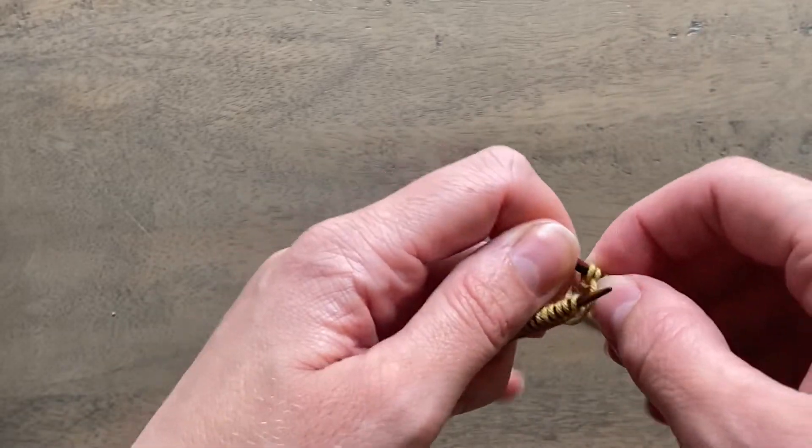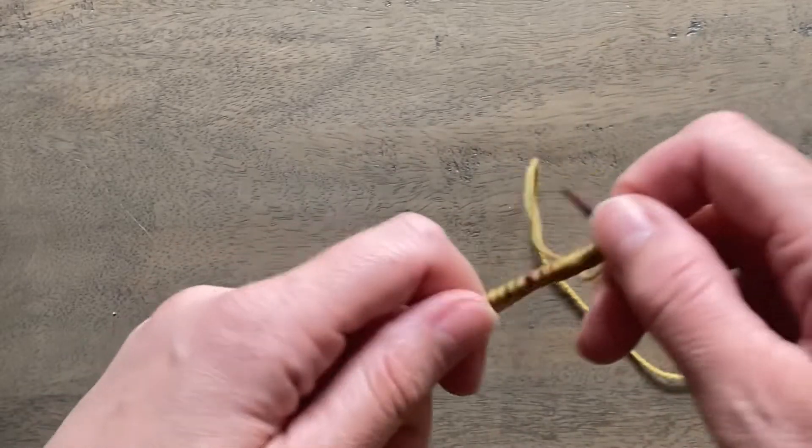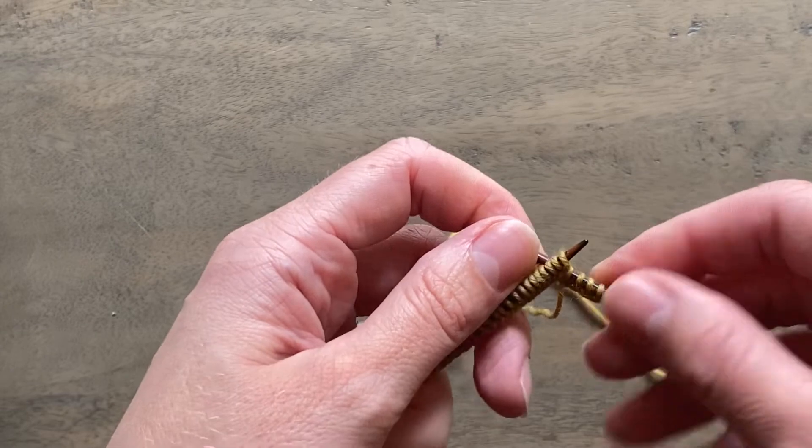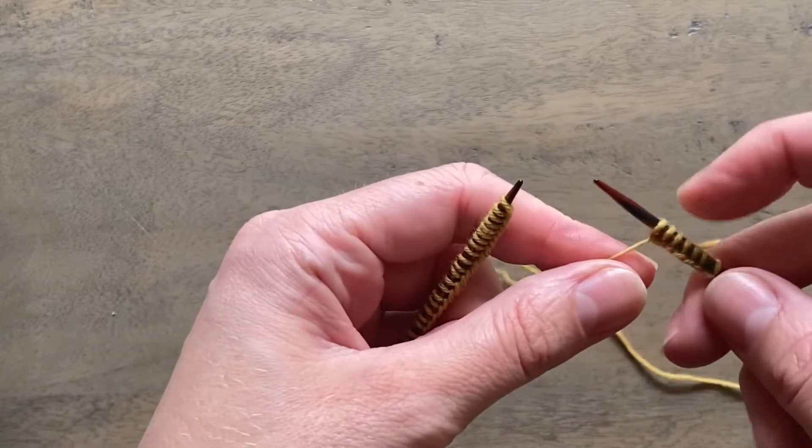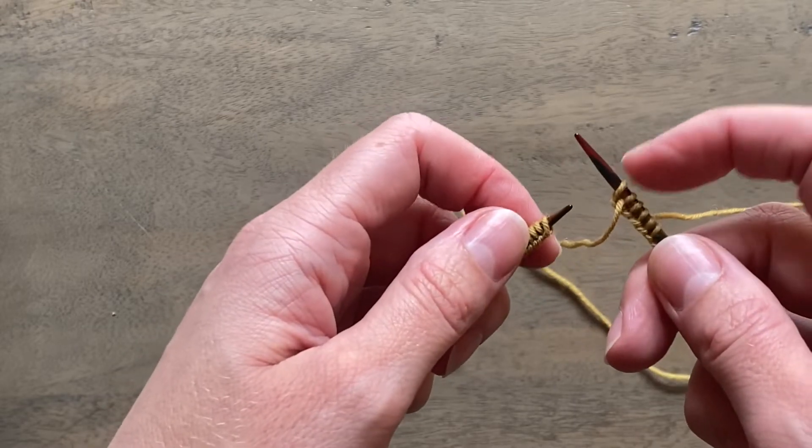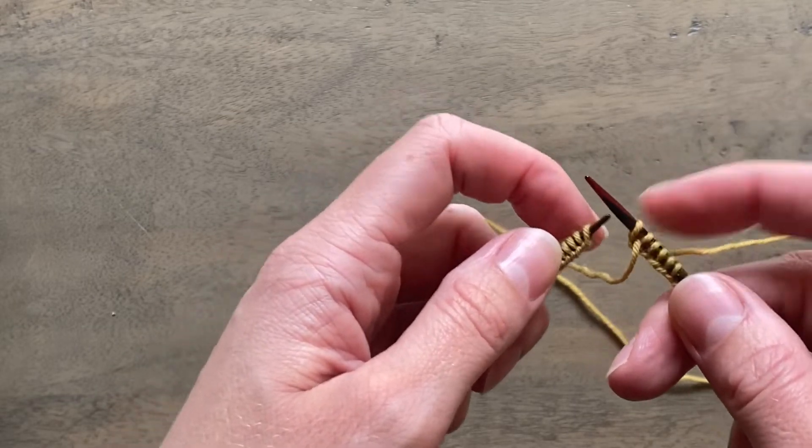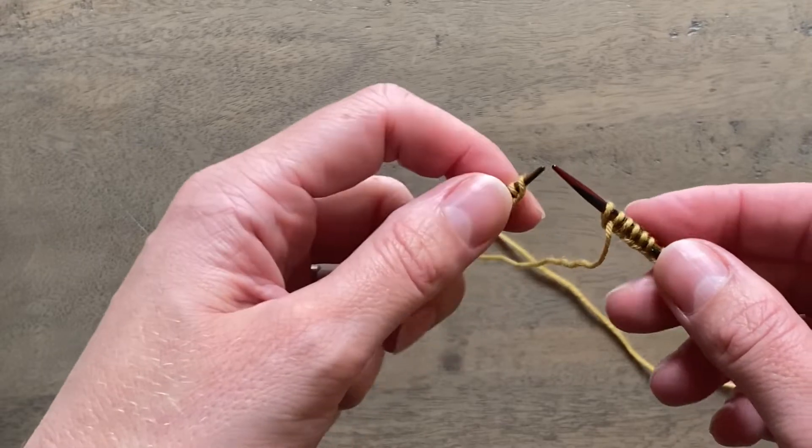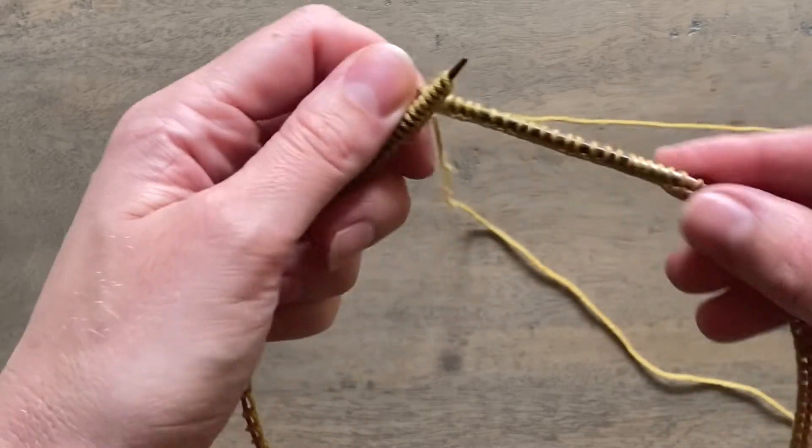So I will show you it and basically what I've got you to do in the pattern is to cast on one more stitch than you actually need to work the neckband and that one extra stitch is going to be used to connect your stitches in the round.